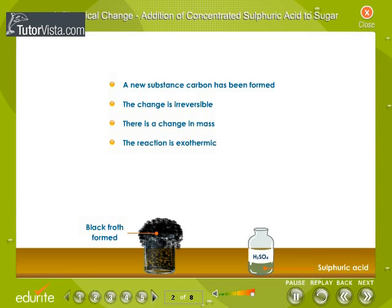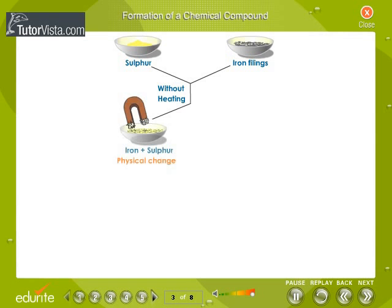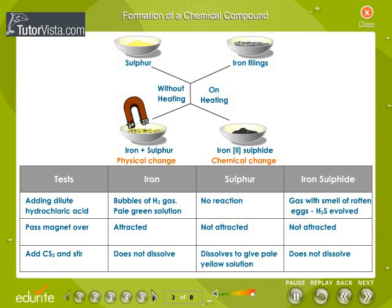The characteristics of a chemical change can be summed up as shown here. Formation of a Chemical Compound: a compound in its properties is entirely different from its constituent elements. Formation of a compound is a chemical change.